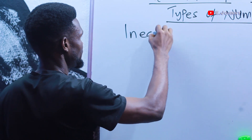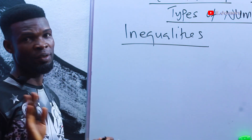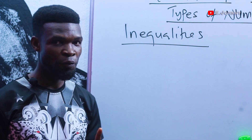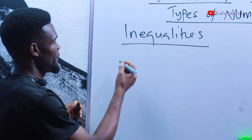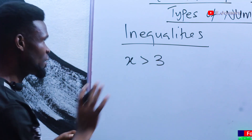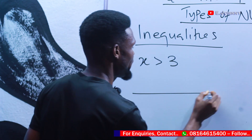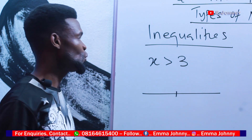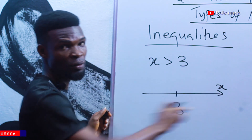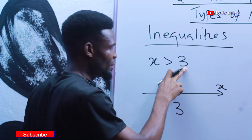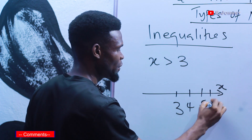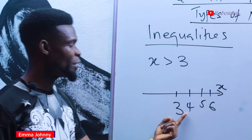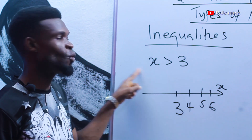We are looking at inequalities — I'm not teaching inequalities as a full topic, but I want to borrow some ideas to help us with listing elements of a set. In inequalities, if we have x is greater than three, and we want to represent this on a number line, we write three on the x-axis. Numbers greater than three go to the right — four, five, six, and so on.